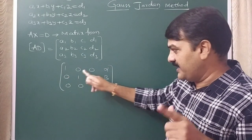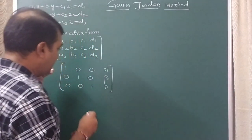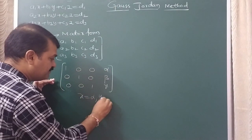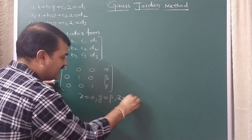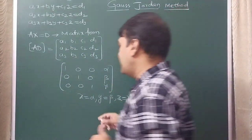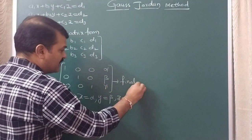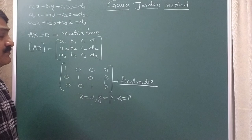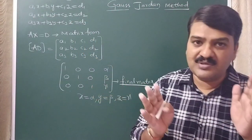From the second row: 0·x + 1·y + 0·z = β, so y = β. From the last row, z = γ. This is the unique solution. This final matrix is the last step in our process — once this matrix is obtained, you can directly write the unique solution x = α, y = β, z = γ.